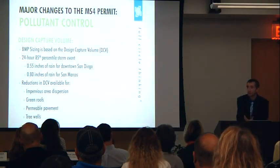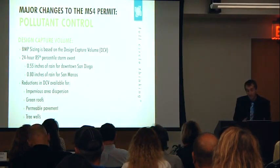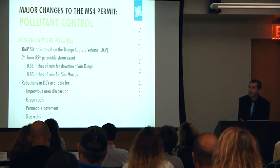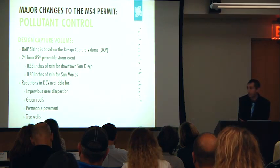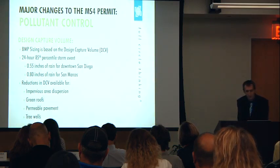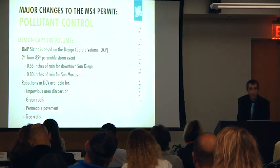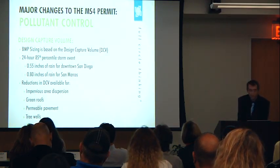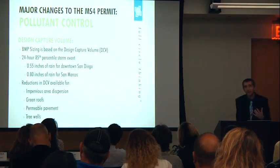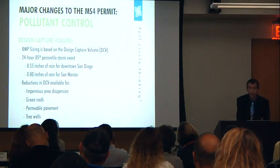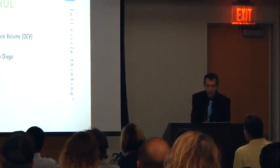The calculation of the Design Capture Volume takes into account site area, runoff coefficient, percent impervious area, and soil type. There are also reductions available through certain site design features, such as impervious area dispersion — if you disperse runoff into landscape areas at sufficient ratios, you can get a reduction in the DCV and therefore in BMP size. Other reductions come from green roofs or permeable pavement, treated as pervious under the BMP Design Manual because they allow infiltration or absorption by the soil.